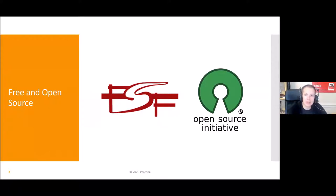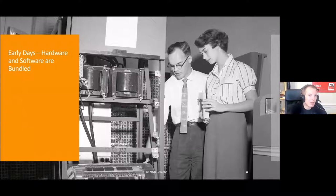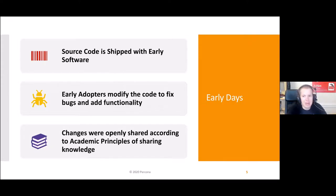Let's start looking at some history. Where is this open source software coming from? If you look at the early days, hardware and software were actually bundled together. And software code was shipped with that early software. The early adopters could modify the code to fix bugs and add functionality as they needed. And those changes were also openly shared according to the academic principles of sharing knowledge. That wasn't quite called open source at that time, or even free software — those terms came about much later. But in essence, that was something like that.